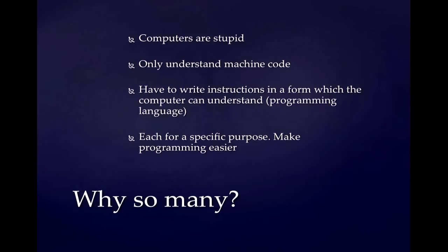Computers only understand machine code. Machine code boils down to zeros and ones — computers only understand zeros and ones. In the olden days, when computers first came out, programmers would have to write code using zeros and ones, because this was the only language computers could understand.